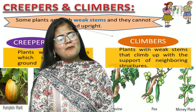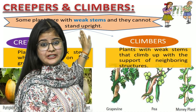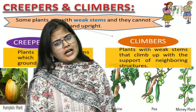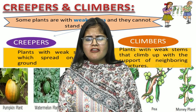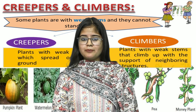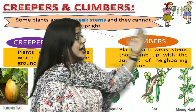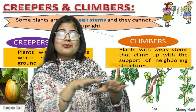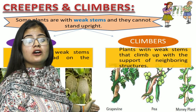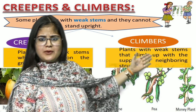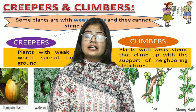The fourth classification is creepers. Creepers are plants which have a weak stem and cannot stand upright. The difference between creepers and climbers is that creepers spread on the ground. Examples of creepers include watermelon and pumpkin.